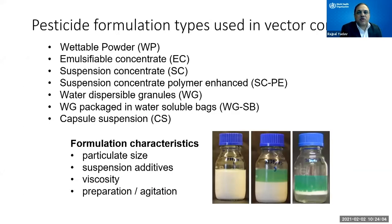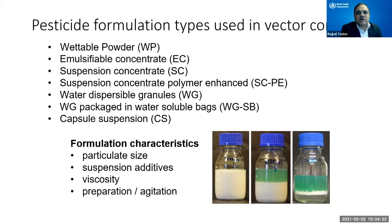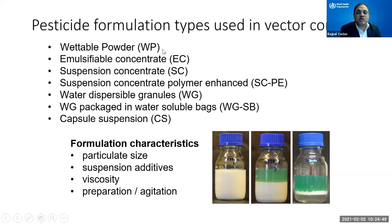In terms of pesticide formulation types, wettable powder employs at least three elements: the active ingredient, a wetting agent (because many insecticides do not mix in water), and often adjuvants or other formulants. Most of the material in wettable powder is inert, with the active ingredient present in a smaller quantity depending on the formulation.